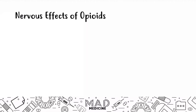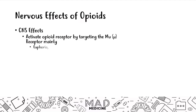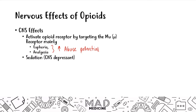Opioids have both CNS and PNS effects because you have opioid receptors on both your central and peripheral nervous systems. Opioids preferentially bind to the mu receptor, leading to euphoria and analgesia — that's the main reason for their high abuse potential. This is also a CNS depressant, so you will have sedation.